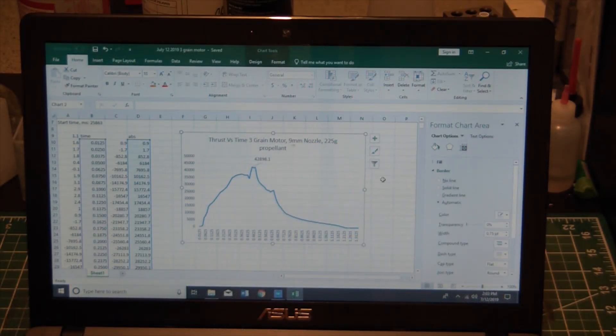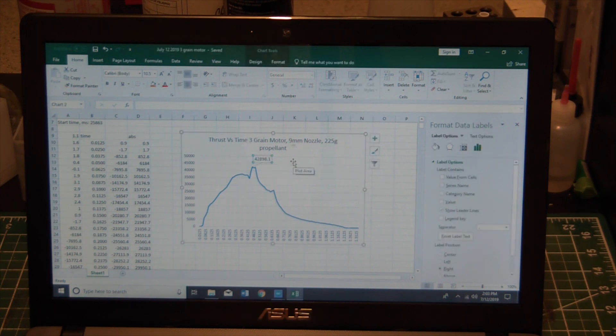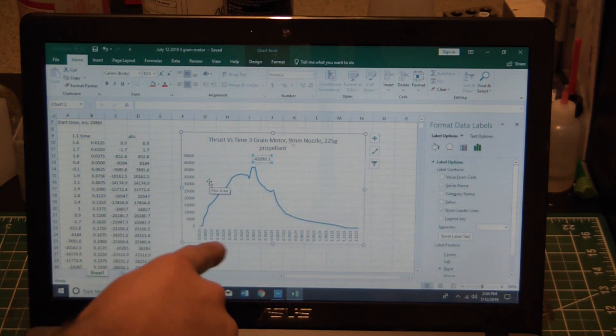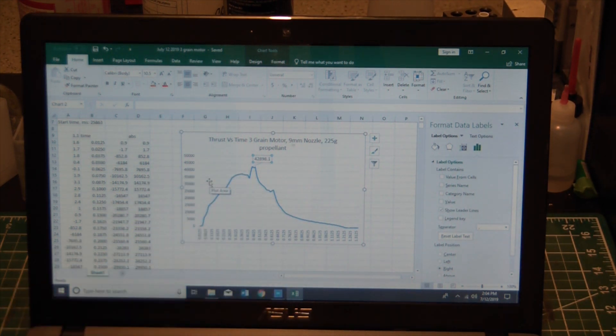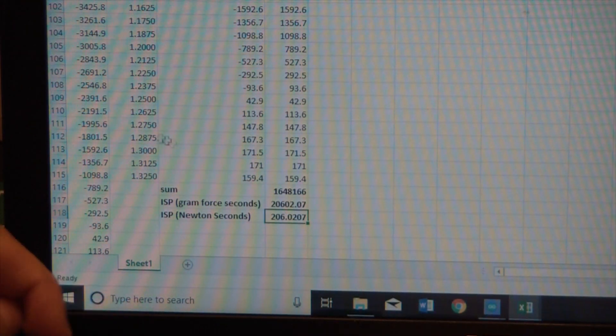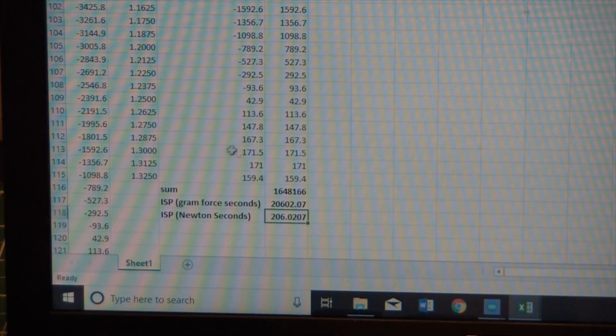Looking at the data here and it is unfreaking believable. Got a max thrust of 42,898 grams, that's like 95 pounds of thrust from 225 grams of propellant. Now it was a very short burn, only about 1.2 to 1.3 seconds, very quick burn there but unbelievable thrust. Not the steadiest thrust curve but pretty good.